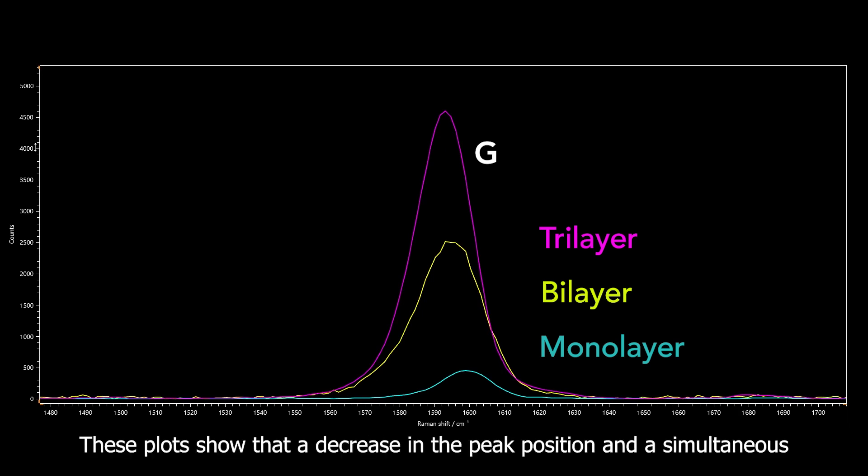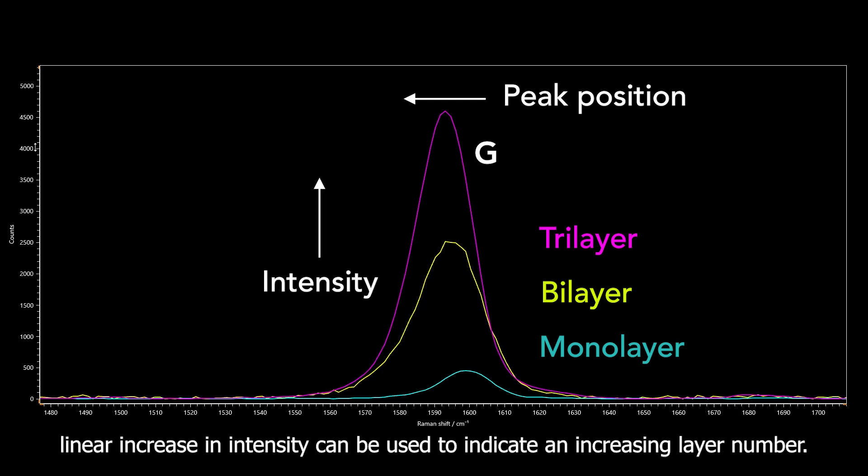These plots show that a decrease in the peak position and a simultaneous linear increase in intensity can be used to indicate an increasing layer number.